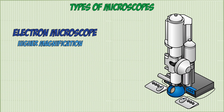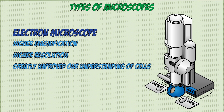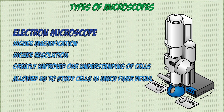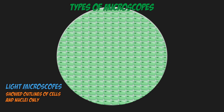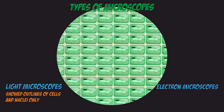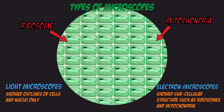Because electron microscopes have a greater magnification and resolution, when they were created in the 1930s our understanding of cells improved greatly. We were able to study cells in much finer detail. Using light microscopes only allowed us to see the basic outline of cells and their nuclei. But with electron microscopes we could zoom in with higher magnification and see subcellular structures such as mitochondria and ribosomes, which greatly increased our understanding of them.